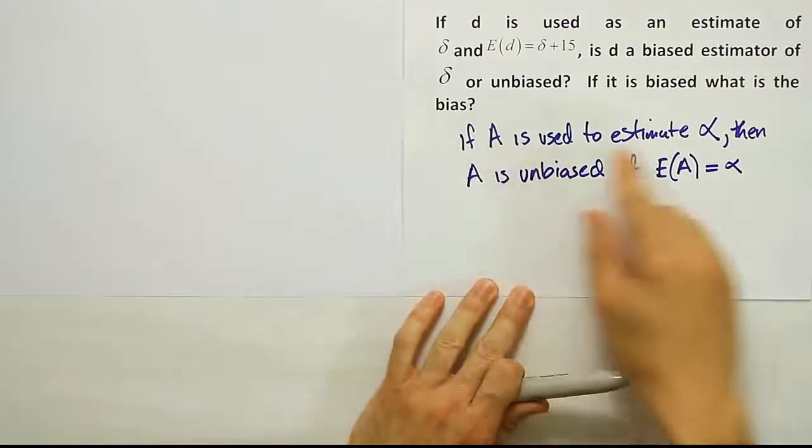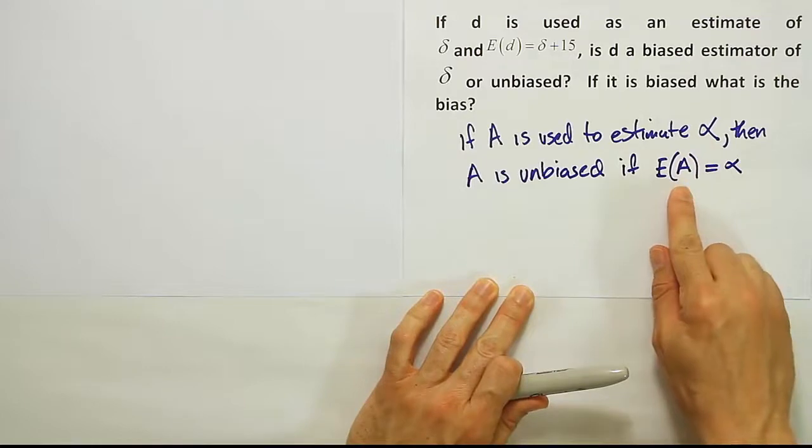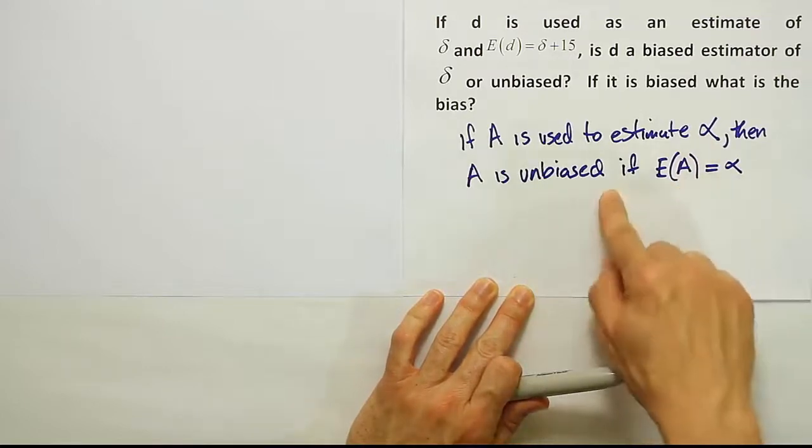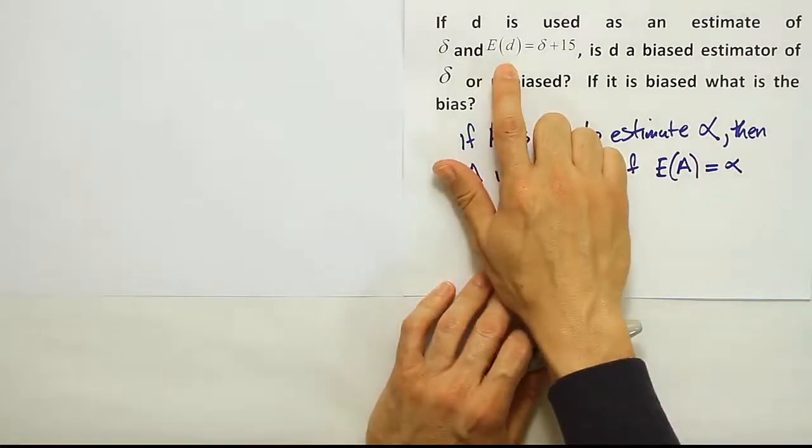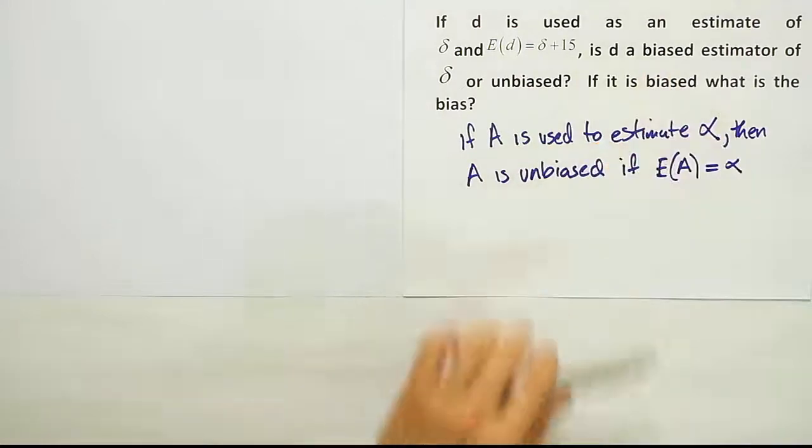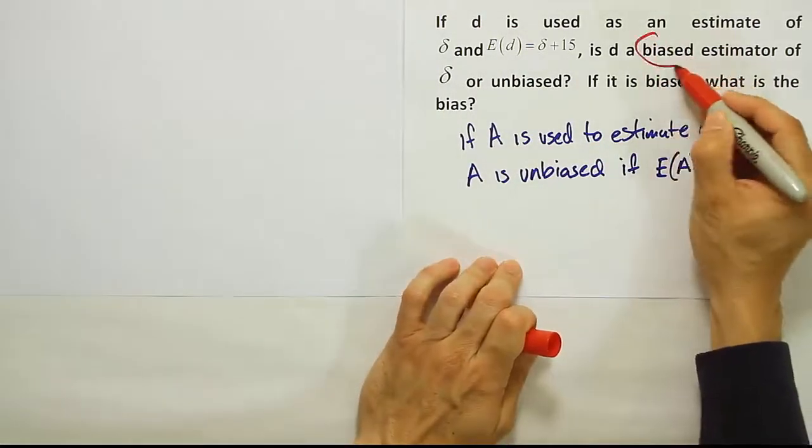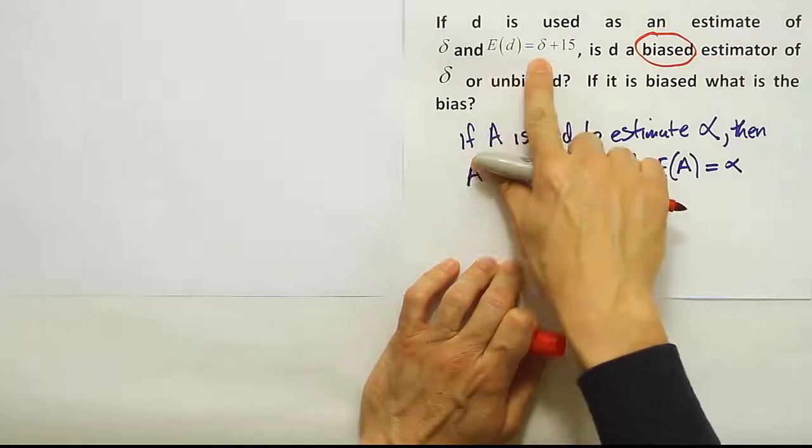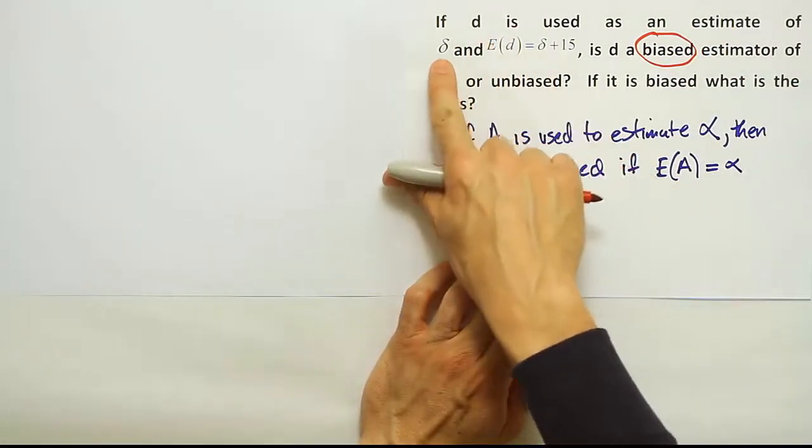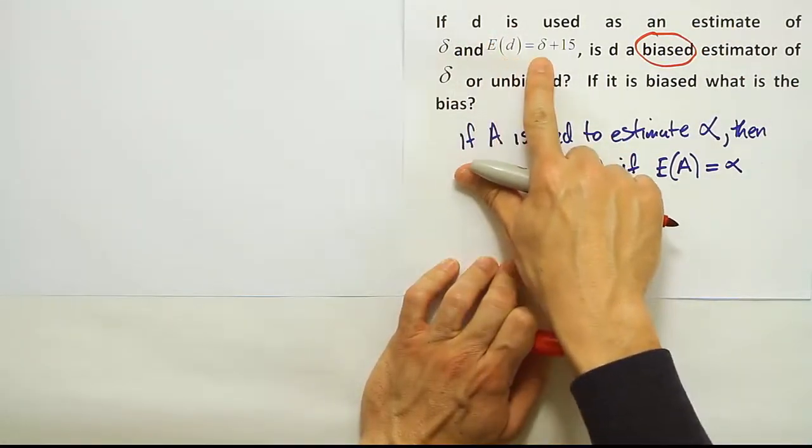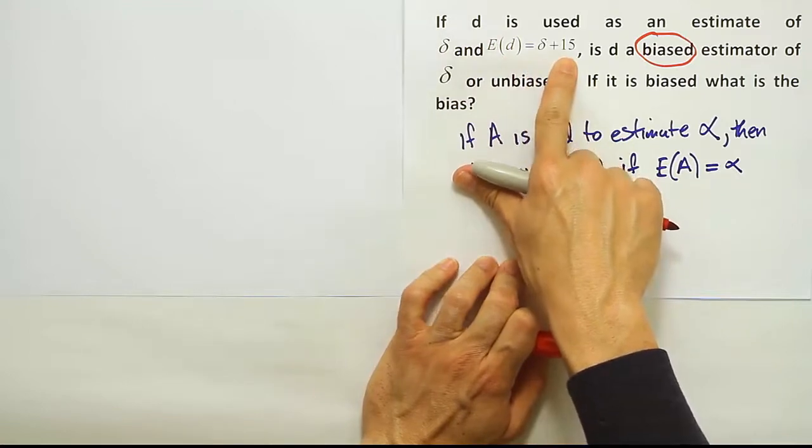A is supposed to estimate alpha. If the expected value of A is equal to alpha, we say it's unbiased. So when we look at this, I can see that this must be biased. It has to be biased because it's not equal to delta. D is estimating delta, but its expected value is not equal to delta, it's equal to delta plus 15.